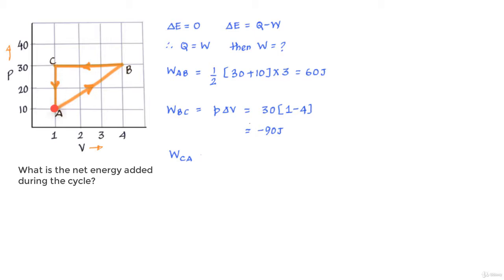Now from C to A we can see that the volume is not changing hence the work done is 0. So through the cycle the work done is W_AB plus W_BC plus W_CA which is equal to 60 minus 90 plus 0 which is equal to minus 30 joules.